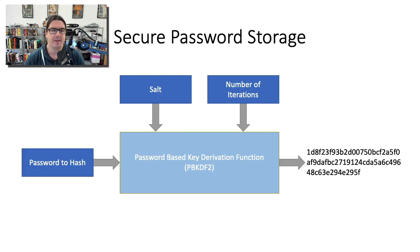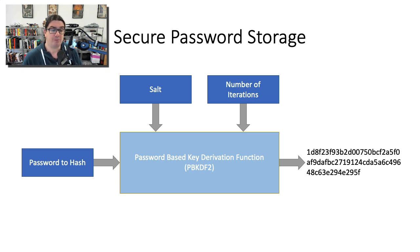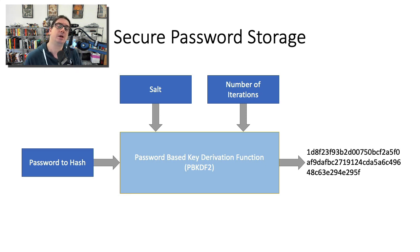What we have next is another technique called a password-based key derivation function, which sounds complicated but actually isn't. It's just the next evolution of password hashing. In the light blue box we have what's called a PBKDF2 — a password-based key derivation function. Like before, we have a password and a salt, but we also pass in a number of iterations value. This means the password is going to get hashed multiple times depending on that number.